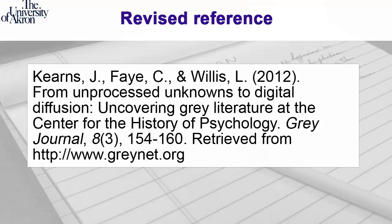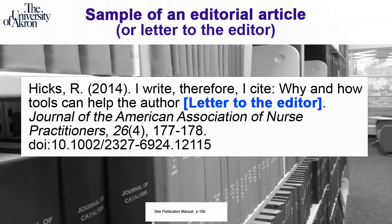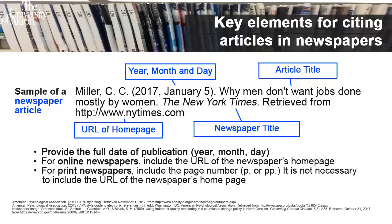For journal supplements, provide the supplement number in parentheses after the volume number. Another type of article is a letter to the editor — use brackets to enclose the term 'letter to the editor.' For both magazines and newspapers, at minimum, provide the year and month. A citation for a trade or professional magazine can include the year and month, followed by the article title, the magazine title, volume, and issue. The DOI number is added when available. A citation for a newspaper can include the year, month, and date, followed by the article title, the newspaper title, and the URL of the newspaper's home page.